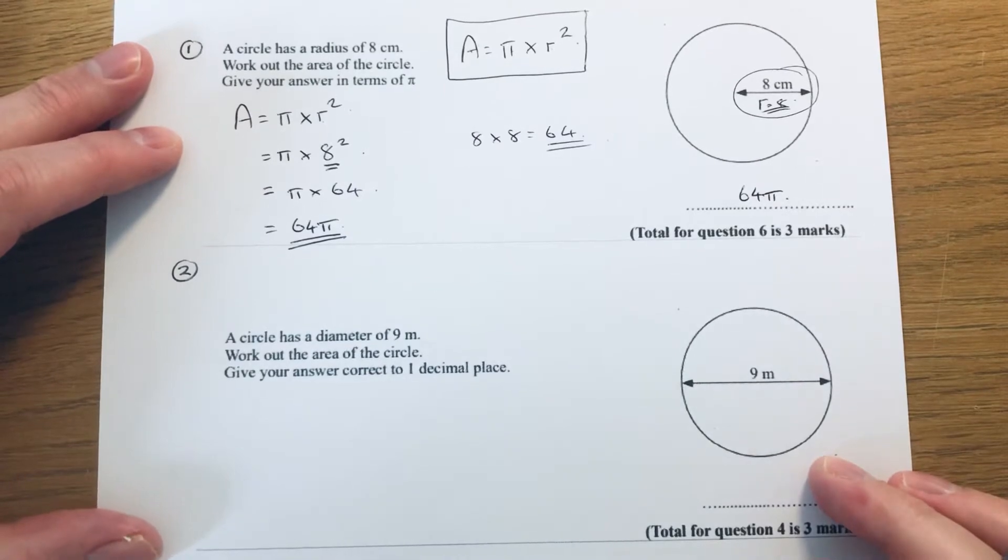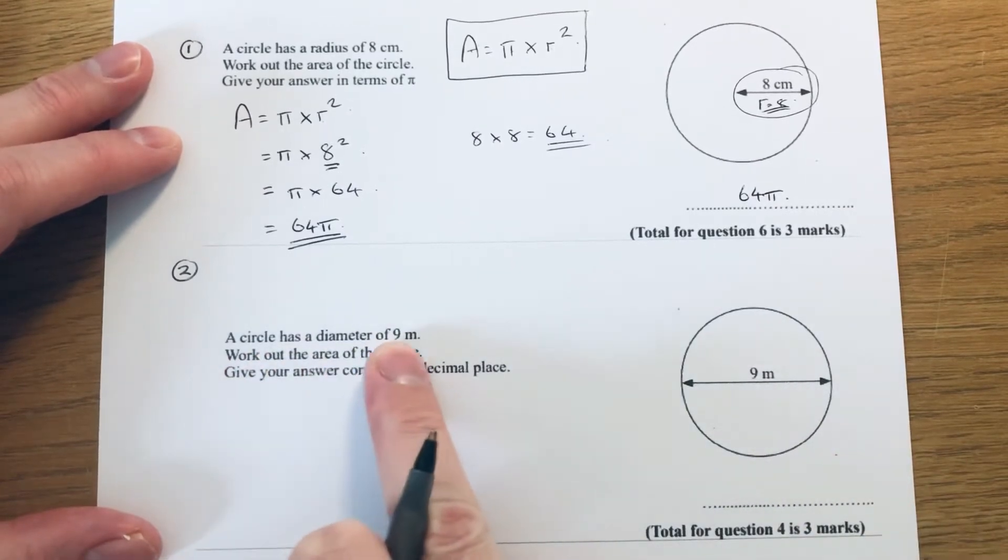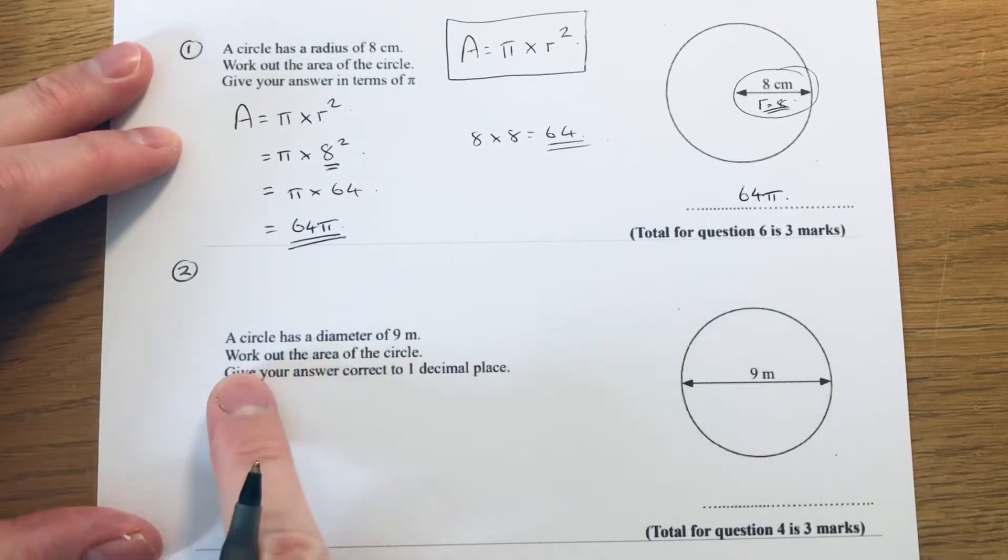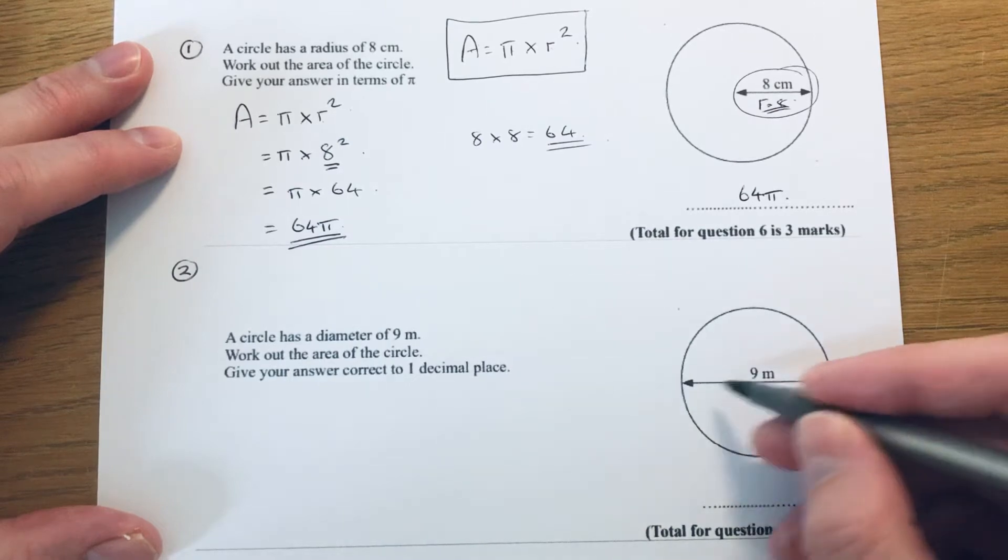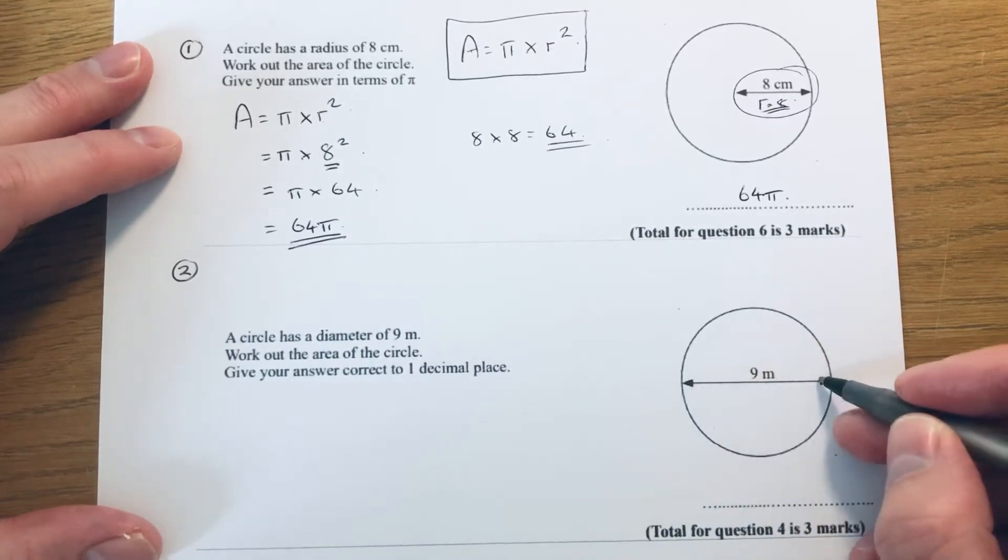Let's have a look at our second question. A circle has a diameter of 9 meters. Work out the area of the circle. Give your answer correct to one decimal place.